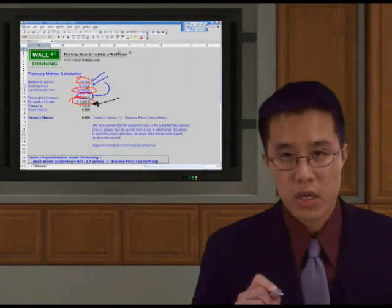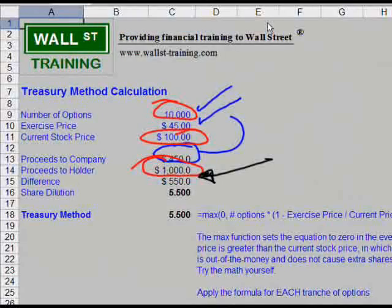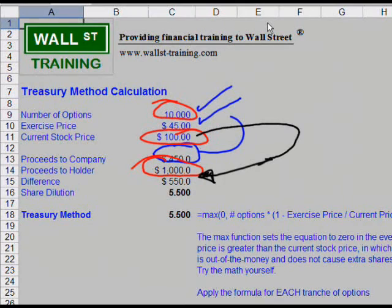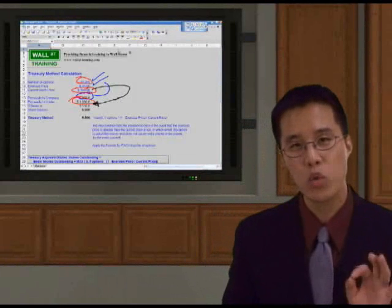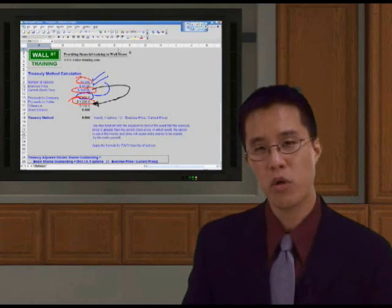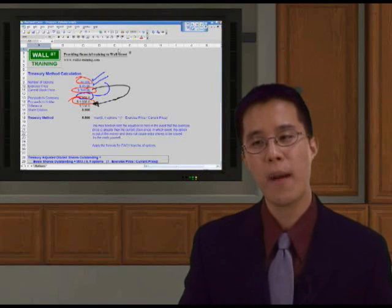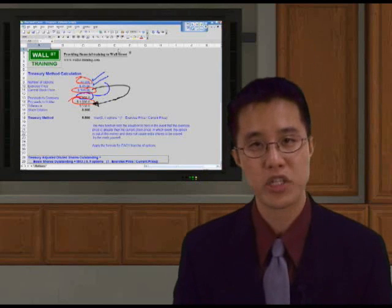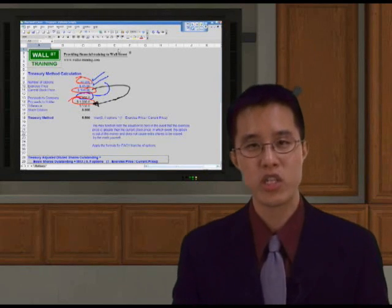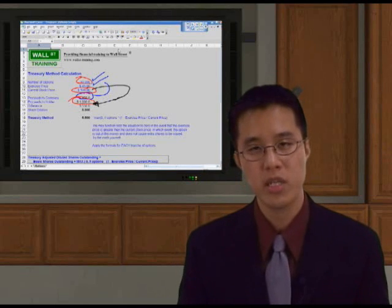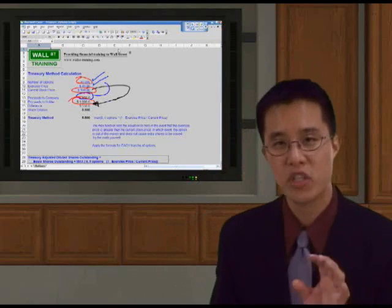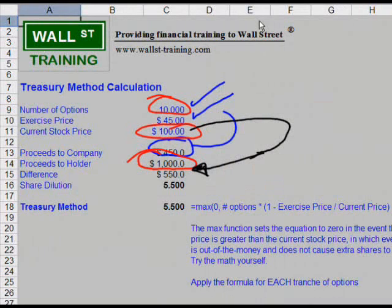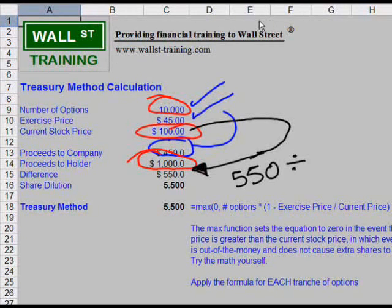Now, if each stock is worth $100 in the current market, as we've said, what are we going to do? $550 is how much the management team should get in total. What is the share equivalent? Instead of the company giving them $550 in cash, what we do is we assume that this is a cashless convert or a cashless exercise. And the company will basically, instead of giving them $550, they will give them 5.5 shares.